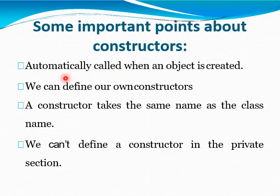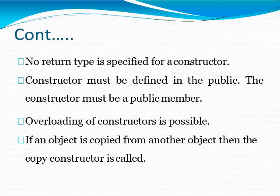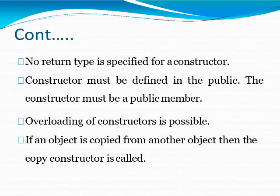Some important points about constructors: A Constructor is automatically called when an object is created. We can define our own Constructor. A Constructor takes the same name as the class name. We cannot define a Constructor in a private section — this is a very important point. No return type is specified for the Constructor. A Constructor must be defined in the public section. Overloading of a Constructor is possible. If an object is copied from another object, then the Copy Constructor is called.